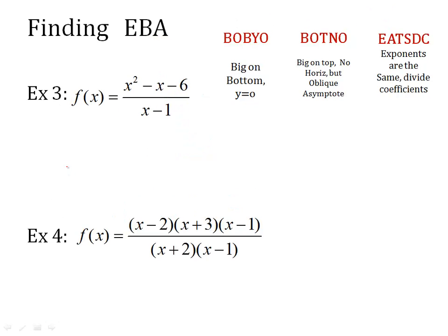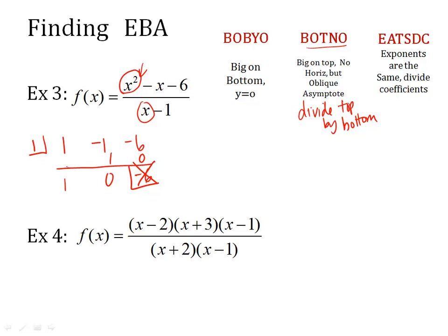Let's try some more. BOBYO BOTNO EATSDC. Look at this. x squared on top, x on bottom. Which one's bigger? x squared. So it's big on top. Big on top means it's oblique. So what happens? If it's big on top, then you divide top by the bottom. Use synthetic division. So I would divide by x minus 1. So I change my sign to a 1. Pull out my coefficients in order. And synthetic: 1 times 1 is 1. Negative 1 plus 1 is 0. 0 times 1 is 0. Negative 6. Now, once you've done that, you have a remainder. When you're doing BOTNO, you can ignore the remainders. But you leave what's left. Remember the rule? One less than the highest power. So this is 1x plus 0. So my line is y equals x. That's an oblique line.